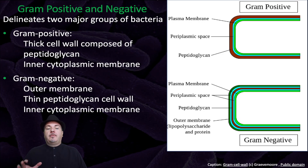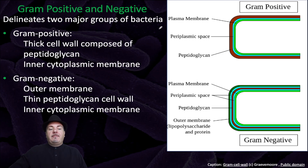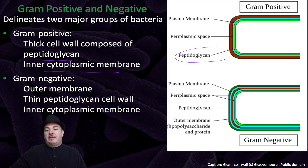There are two major groups of bacteria: gram-negative and gram-positive. The gram-positive bacteria have a very thick cell wall composed of peptidoglycan and an inner cytoplasmic membrane. In this figure on the right, in red, we find this very thick peptidoglycan layer. And then inside of that, we have the plasma or cytoplasmic membrane shown in green.